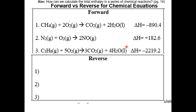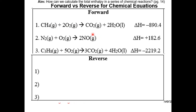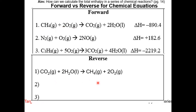We are first going to analyze the forward and reverse reaction for chemical equations. Here we're given three chemical equations and the delta H, which is the enthalpy. To write the reverse reaction, we have to flip the forward reaction. For example, in question 1, the products of the forward reaction become the reactants of the reverse reaction, and the reactants of the forward reaction become the products of the reverse reaction. The delta H of the reverse reaction is the negative delta H of the forward reaction, so the delta H of this equation will be positive 890.4.